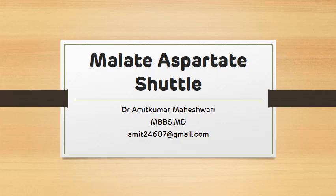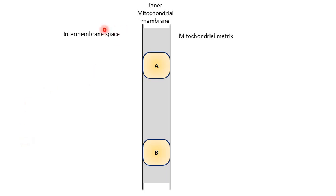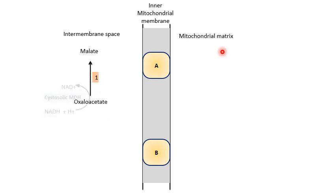Let's see how this malate-aspartate shuttle operates. This malate-aspartate shuttle is highly active in the liver, kidney, and heart mitochondria. As we can see, this is the inner membranous space, this is the inner mitochondrial membrane, and this is the mitochondrial matrix. The reducing equivalents from the cytosolic NADH will be transferred to cytosolic oxaloacetate, and this oxaloacetate will be converted to malate with the help of the cytosolic malate dehydrogenase enzyme.